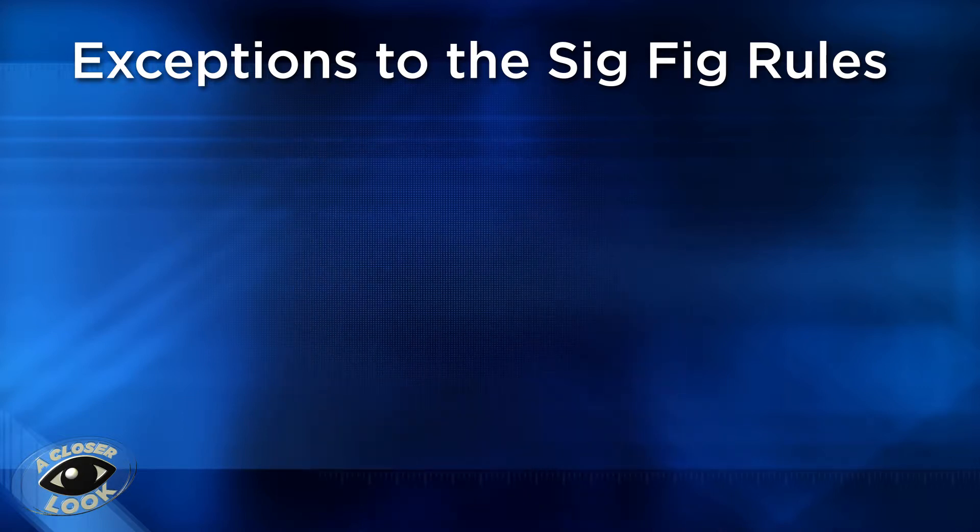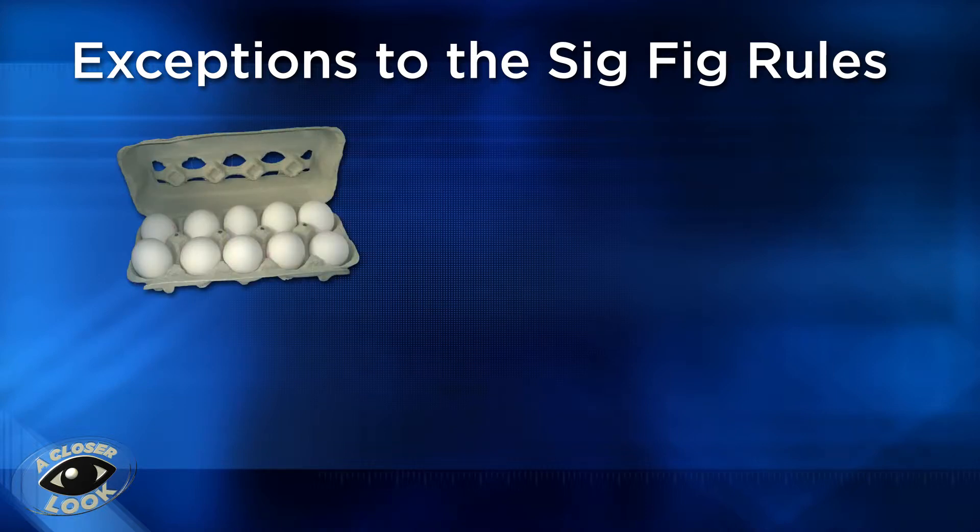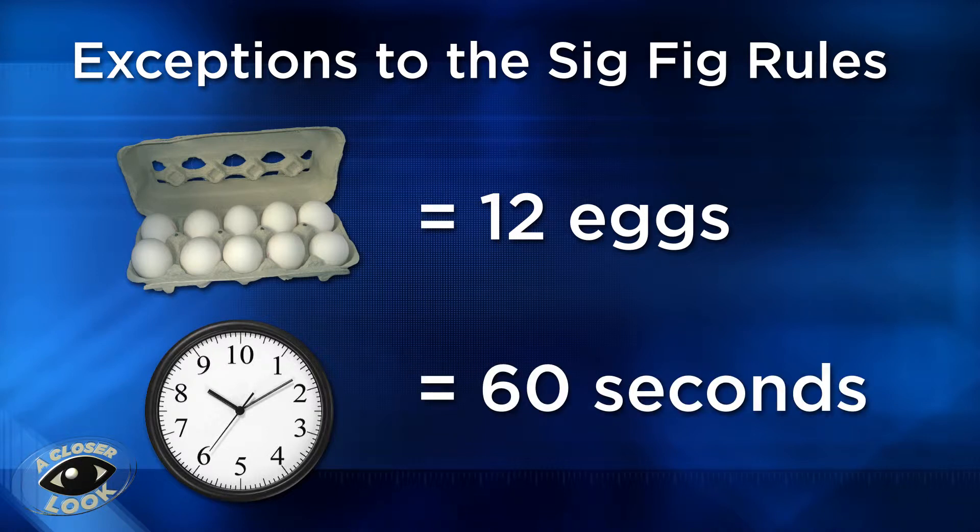Numbers that define other numbers are also an exception when it comes to significant figures. Take one dozen eggs, which is the same as 12 eggs, or one minute, which is the same thing as 60 seconds. These are all examples of exact quantities that would not be assigned a specific number of significant figures.